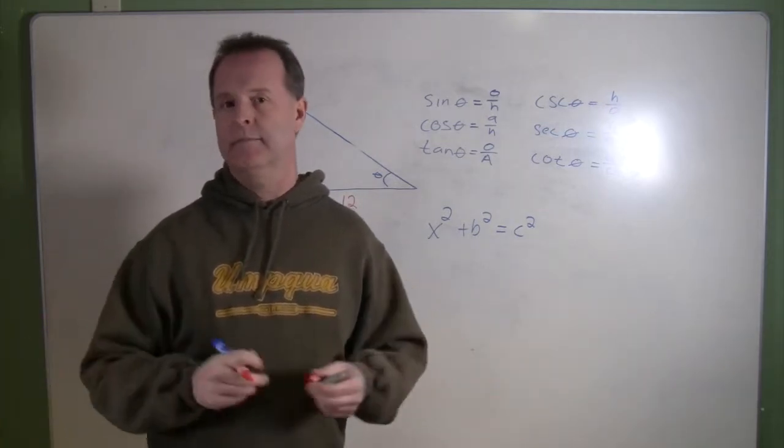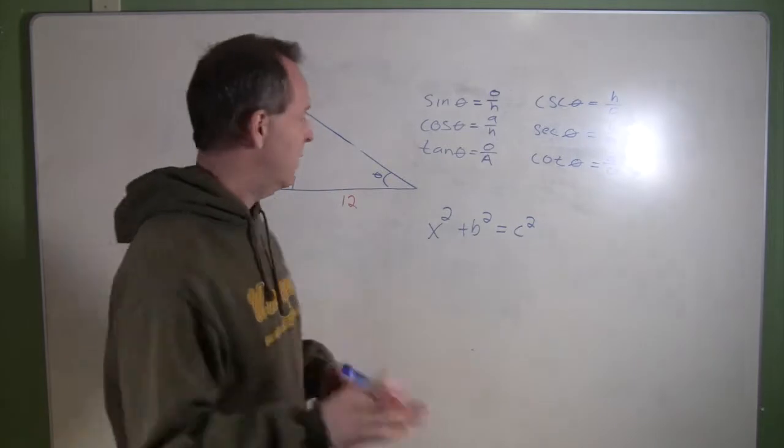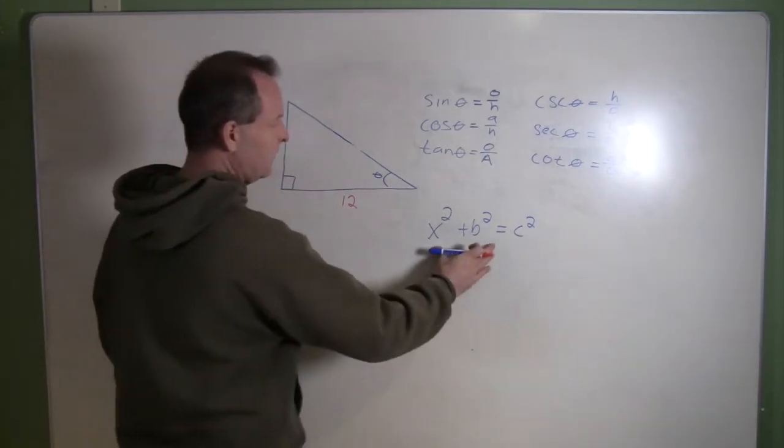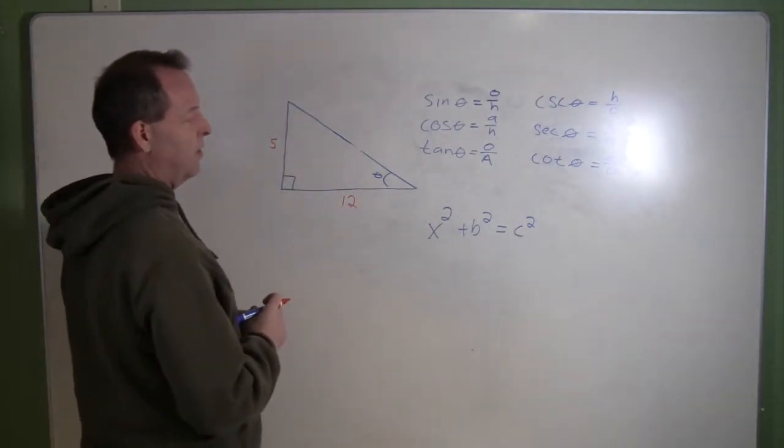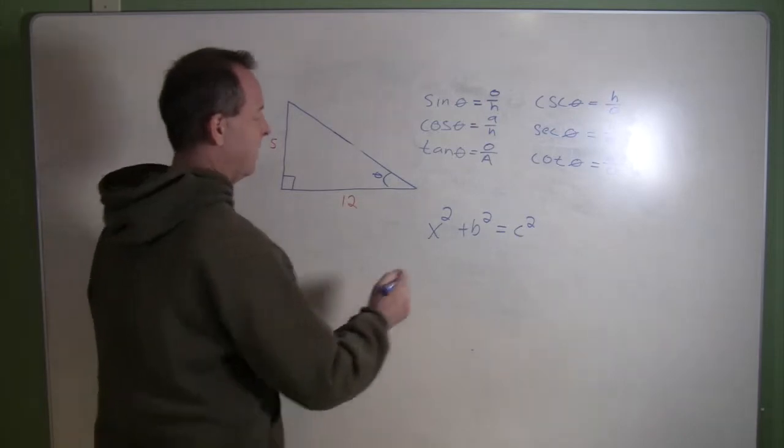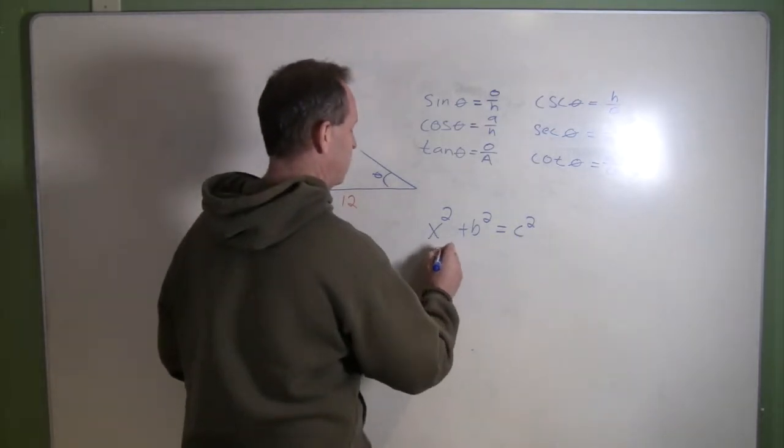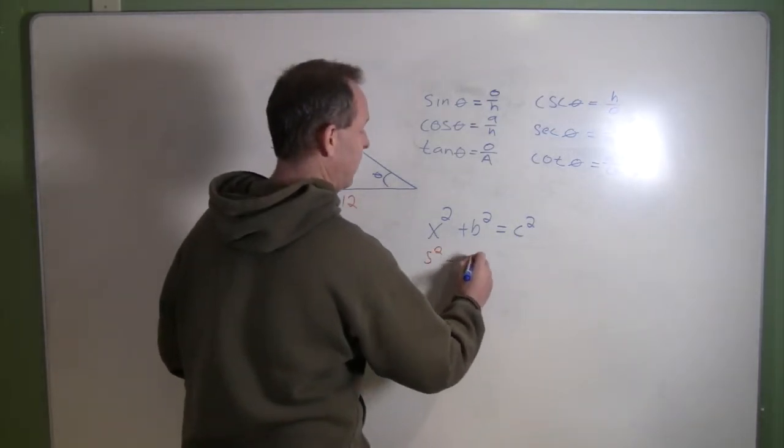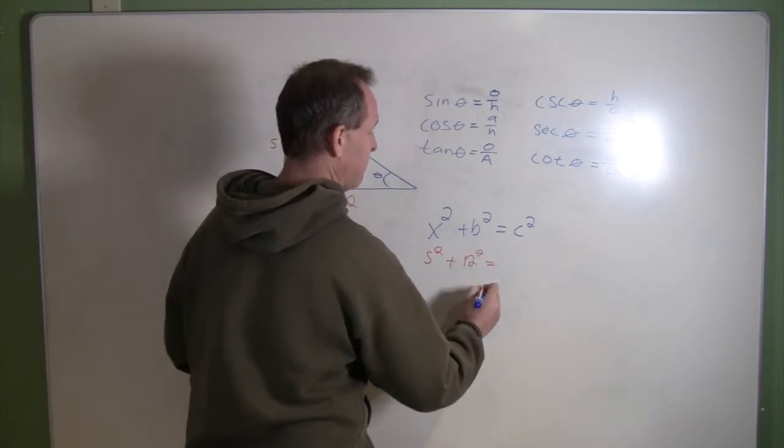I can always guess and hope that my answer is right, or I can remember how to use the Pythagorean theorem. And this basically says 5 squared plus 12 squared equals c squared.